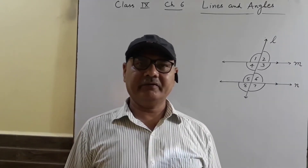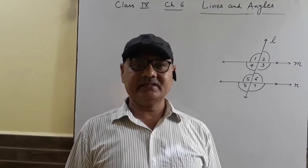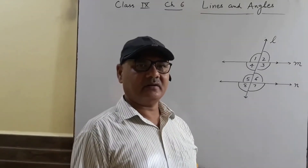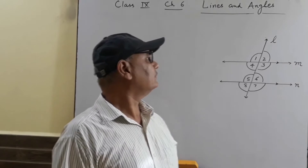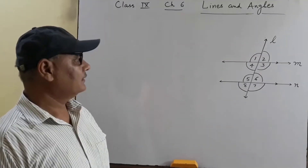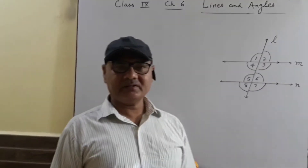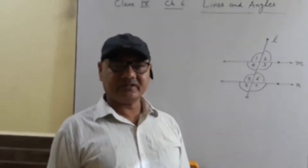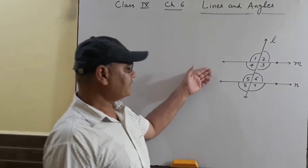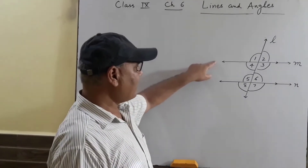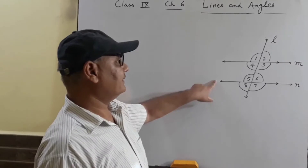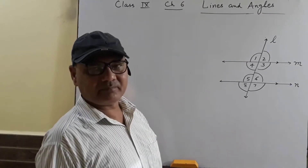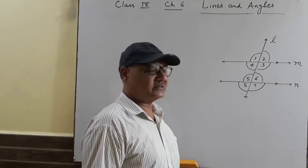Dear students, today we will start Chapter 6, that is Lines and Angles. Before starting this chapter, I would like to tell you about special types of angle forms when a line intersects two lines. N and N are two lines and L is intersecting them at distinct places. Therefore, L is a transversal.